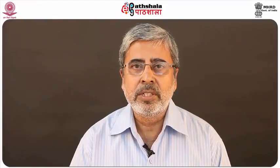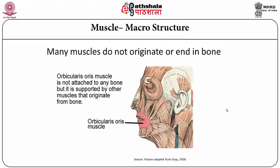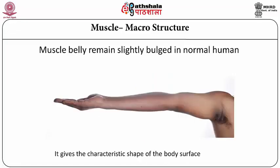Some muscles do not originate from bone. For example, the muscles of the lips — it is a circular type of muscle. The name of the muscle is orbicularis oris, and this muscle actually helps our speech; when we talk, this muscle makes the lip movement. This particular orbicularis muscle originates from other muscles. You can see in the picture how it hangs in space. In the intact human body the muscle belly is slightly bulged, and this bulging gives a characteristic shape to the body.